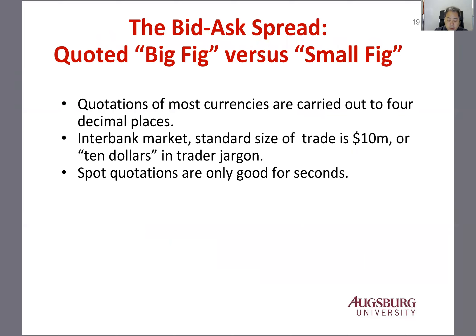Most currencies are quoted to four decimal places. However, some currencies — such as the South Korean Won, for example — can't use four decimal places because the number is so large, so in those cases you have fewer decimal places. In the interbank market, which is a huge market, the standard size of a trade is $10 million — traders just call it '$10' in jargon, but it's actually $10 million. Spot quotations keep changing by the second.